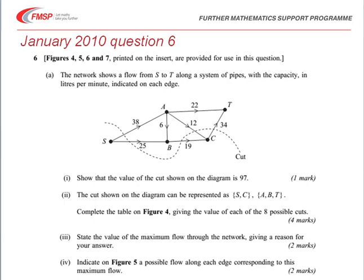We're then asked to complete a table showing the different possible cuts and their capacities. Having done that, from the table we can state the maximum flow through the network, giving a reason for that. And then in another figure, it has to show a possible flow corresponding to this maximum flow.